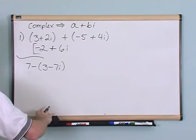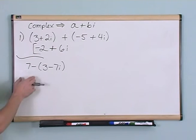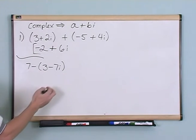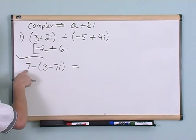they have 0i tacked on to the end. So this is just 7 plus 0i. So in order to add these complex numbers, I've got to add like terms. This is a real number. This is a real number. I can add them together.